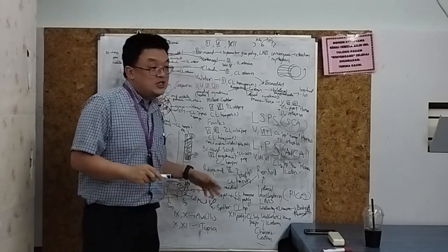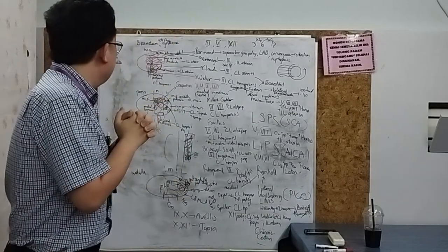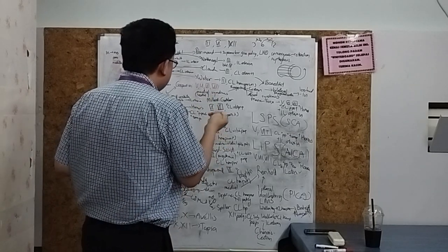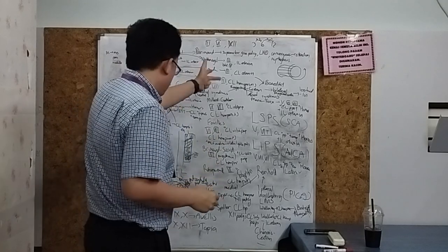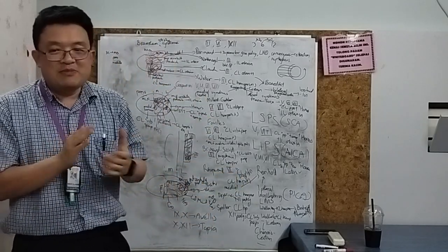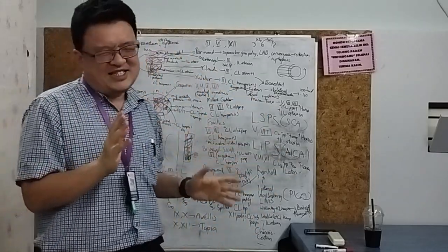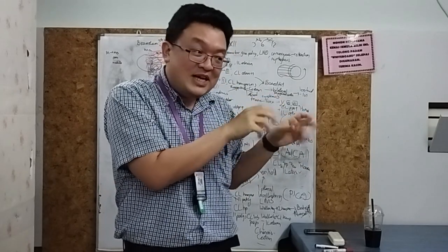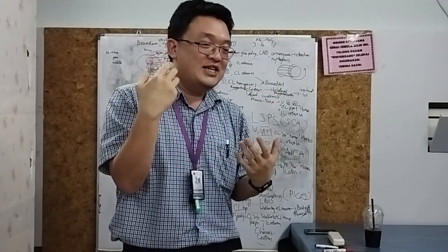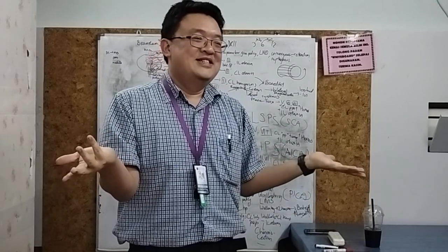So how many brainstem stroke syndromes are there? There are 21 in total. But the key is not to remember all the eponyms — it's to recognize the patterns. Contralateral hemiparesis with contralateral loss of vibration and proprioception means medial or ventral syndrome. Horner's with contralateral loss of pinprick and temperature means lateral syndrome. Cranial nerves 5–8 point to the pons; 9–12 point to the medulla.